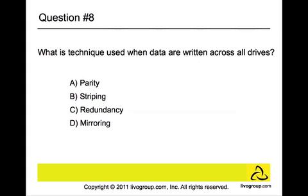Question number eight. What is a technique called when data are written across all drives? Is it parity, stripping, redundancy, or mirroring? The answer is stripping. Stripping is writing data across several drives. The throughput in this technique is dramatically improved because many device heads are utilized. This activity divides and writes the data over several drives, increasing read performance dramatically because more than one head is retrieving data at the same time.